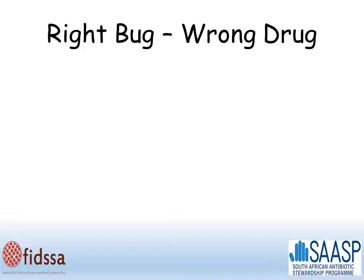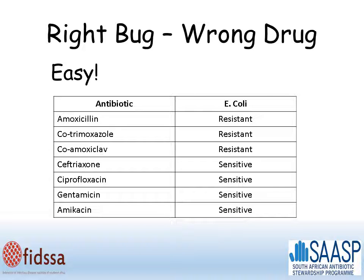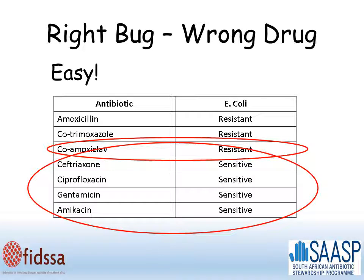Looking at the right drug-wrong drug scenario, this means you know your bug but you're treating it with the wrong drug, and this is easy. By definition, you'll have an antibiogram such as this. Imagine you're treating an E. coli and your empiric choice was co-amoxiclav, to which the organism is resistant. Not surprisingly, your patient is deteriorating or not improving, and you need to change to the appropriate drug. There are four possibilities and it's important not to just look down the list and pick the one highest on the list that says sensitive. In this case, it's likely that ciprofloxacin would be appropriate as opposed to ceftriaxone, gentamicin, or amikacin, because ciprofloxacin is available orally.